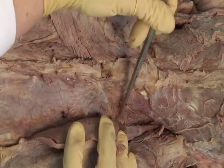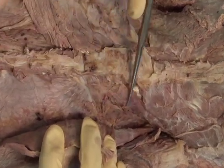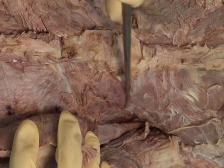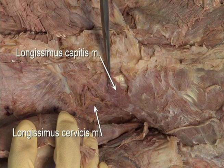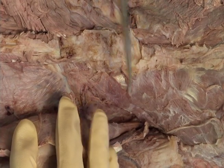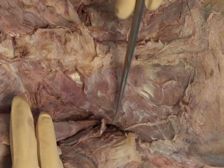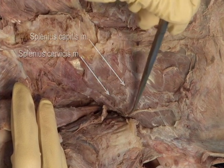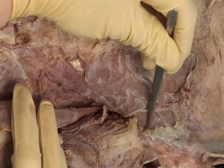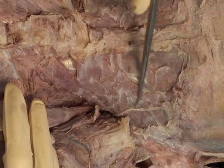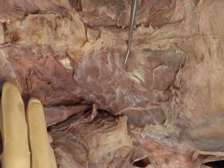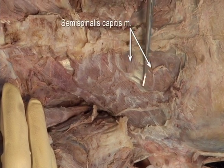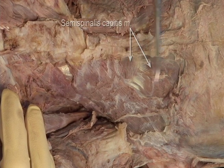Identify the longissimus cervicis. The cervical part of the splenius muscle attaches to the transverse processes, and the capitis to the skull. Also identify the superior fibers of the semispinalis capitis muscle, which attach to the middle of the occipital bone.